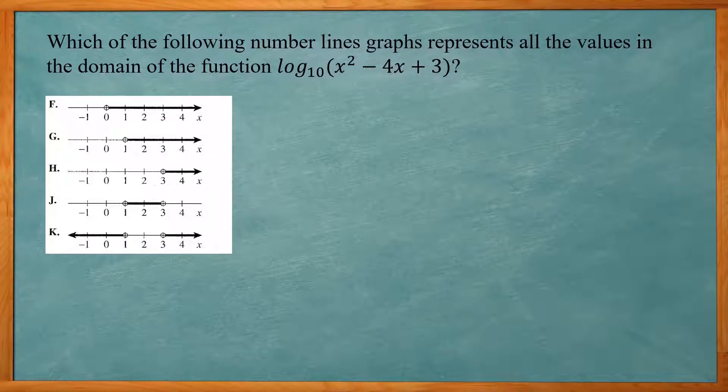This one reads, which of the following number line graphs represents all the values in the domain of the function log base 10 of x squared minus 4x plus 3? Now for logarithms, we cannot take a log of a 0 or a negative number. So 0 will be the lowest number up to 0, but not including 0 is how low we can go for that value inside the logarithm. So basically x squared minus 4x plus 3 has to be greater than 0.